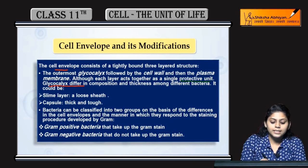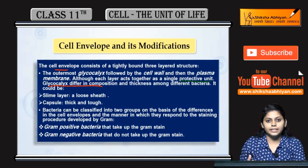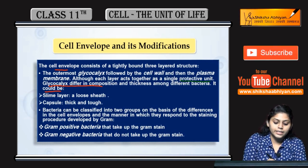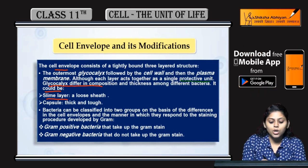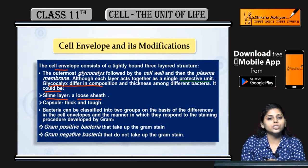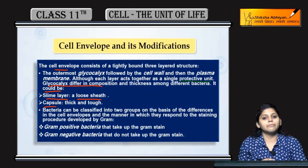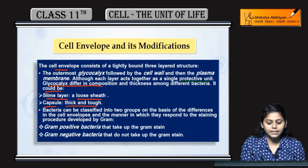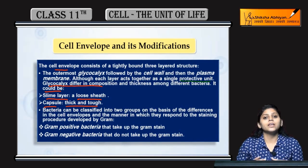Glycocalyx differs in composition and thickness. It could be a slime layer — which has a loose sheath — or it can be a capsule. In the slime layer there is a loose sheath, whereas in the capsule there is a thick, tight, or tough glycocalyx composition.